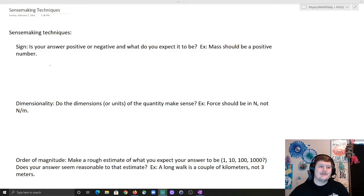The first sense-making technique that we normally use is sign, checking whether your answer is positive or negative and what would you expect it to be. For example, mass should be a positive number. If you solve for a mass and let's just say you go through your problem and you eventually get that the mass is equal to negative 150 kilograms, well that doesn't really make sense to me. That's not a reasonable number because mass is a positive number. You can't have negative mass.